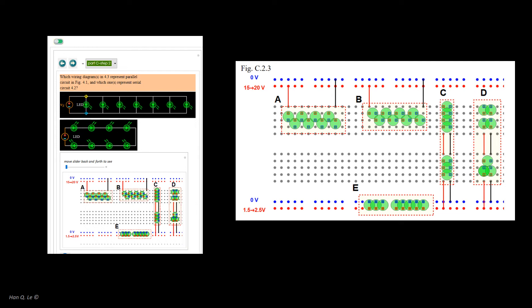There will be currents in circuits B, C, D, and E. However, for circuit D, only one LED will light up. Circuit B is serial, as the current will flow in one LED after another. While circuits C and E are parallel, as the current will flow through each LED independently.